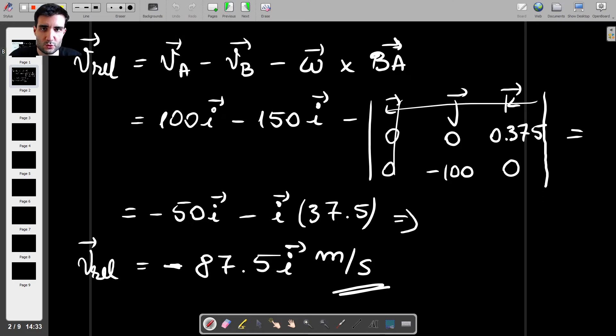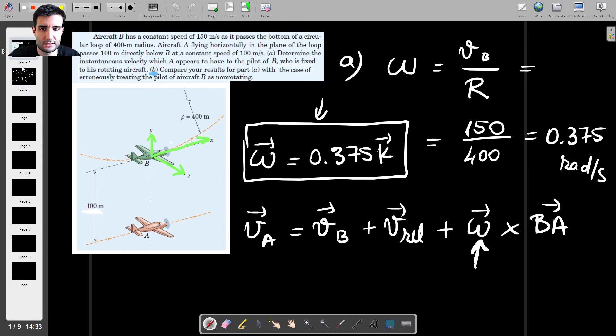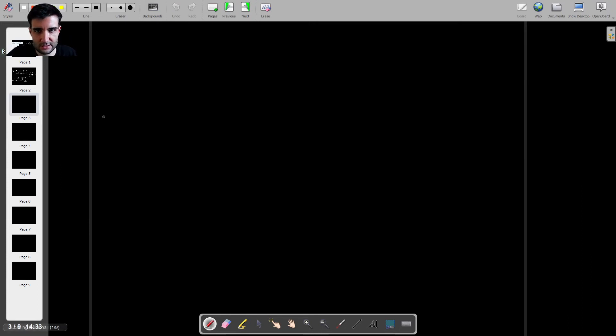Now let's try to do this question again, but this time we're going to assume that aircraft B is not actually, well, we're going to treat it as rotating, but we're going to ignore this term, which is the same as the following. So this is the same as saying that you've got an aircraft, a badly drawn aircraft, that is here, which travel with, this is 150I meters per second.